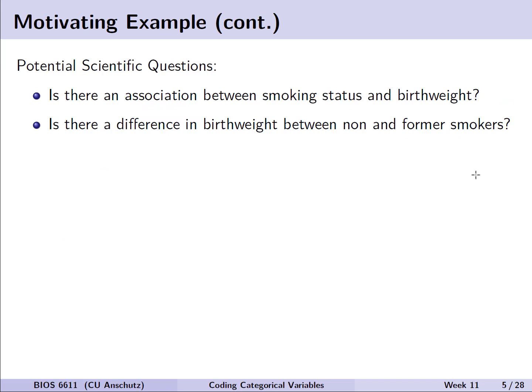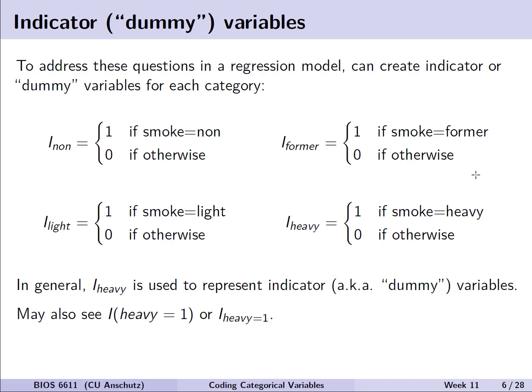With this data, we may have a few potential scientific questions that come to mind. The first is, is there an association between smoking status and birth weight? And also, is there a difference in birth weight between specifically non- and former smokers, or between any two given categories? To address these questions in a regression model, one approach is to use indicator or dummy variables. We can create an indicator variable for each category, denoted with a subscript indicating the category — for example, i sub non equals 1 if a non-smoker and 0 otherwise, and likewise for former, light, and heavy smokers.